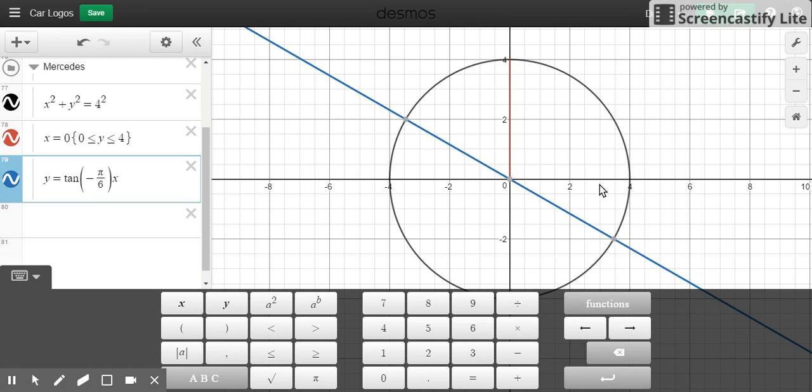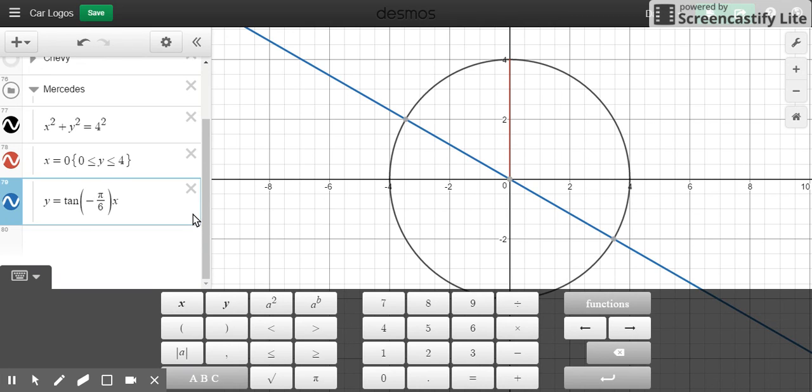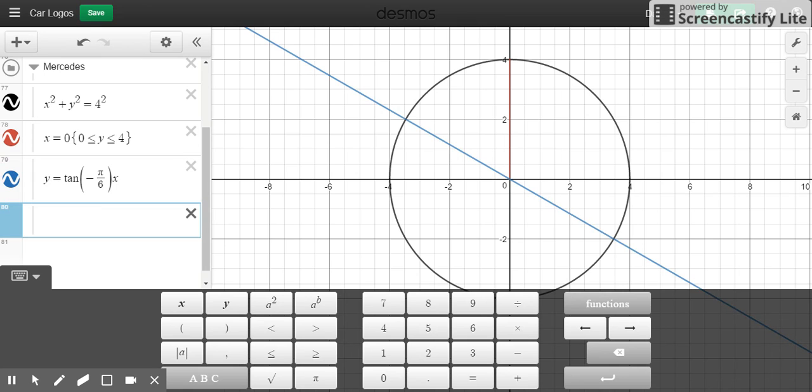So from here we're going to go down 90 degrees, then we're going to go back another 30 degrees. So negative 30 degrees is the same as negative pi over six in radians. I don't know of a feature in Desmos that does degrees, so you're going to have to convert it yourself.